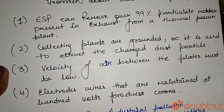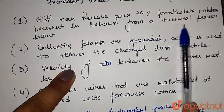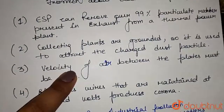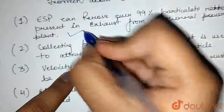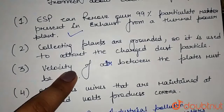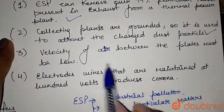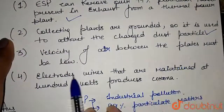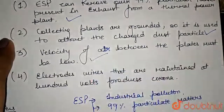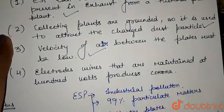Let's get back to our options. Option A: the electrostatic precipitator removes 99% of particulate matter from exhaust — this option is correct. Option B: collecting plates are grounded so they attract dust particles — this is also correct. Option C: the velocity of air between the plates must be low — this is correct, because if the velocity is high, the dust particles will not fall.